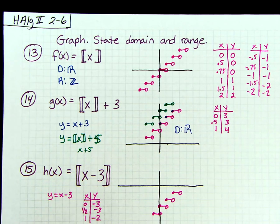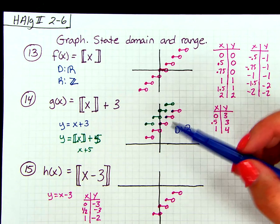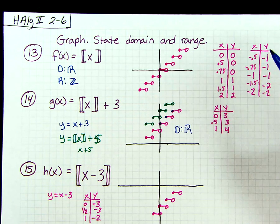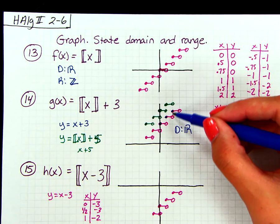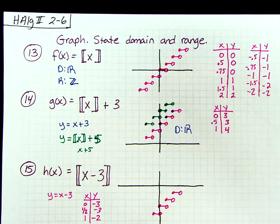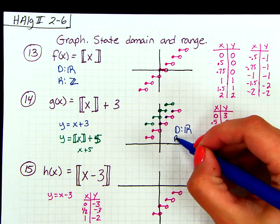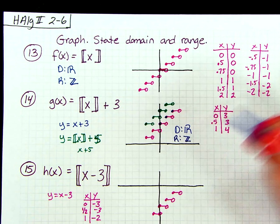And our range, again, if I'm looking at this, well, we have 1, 2, 3, 4, 5, 6, 7, 8, and it's going to continue, but we're skipping all the parts in between. So that means that we're only going to have positive, negative whole numbers again, including 0. So my range, again, is just going to be all of the integers.